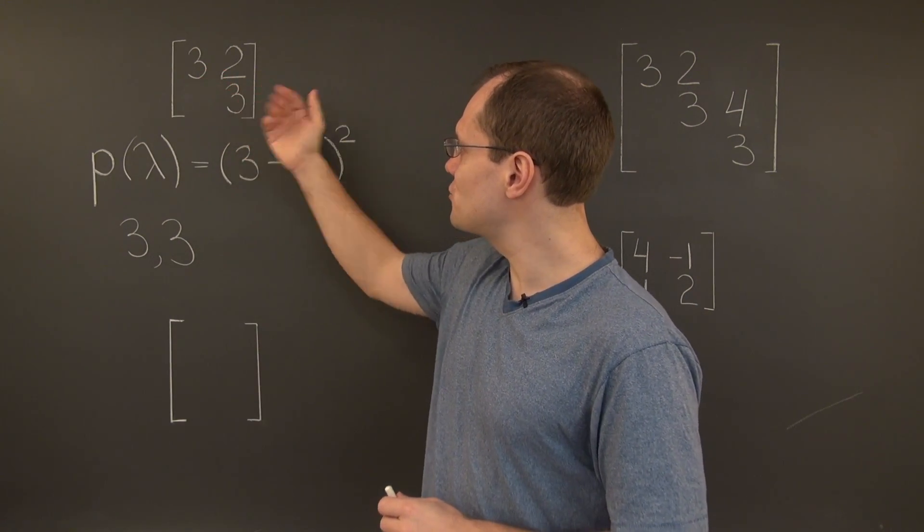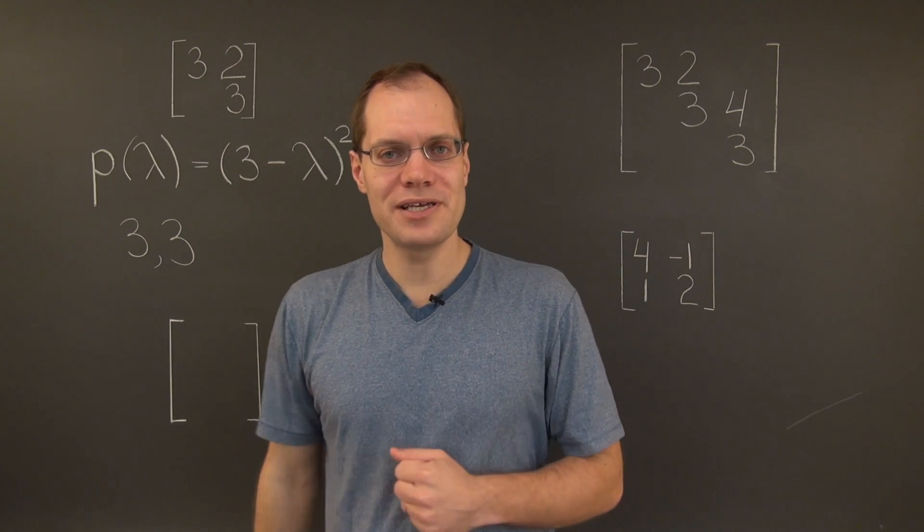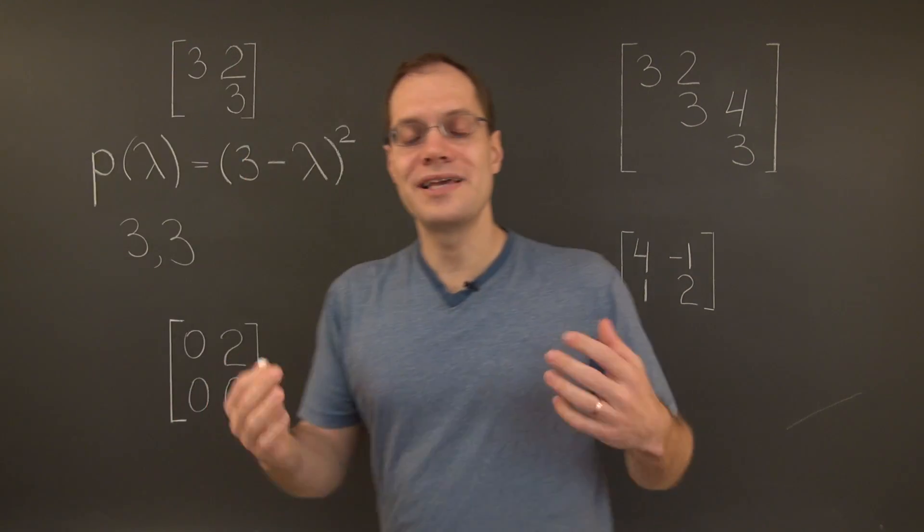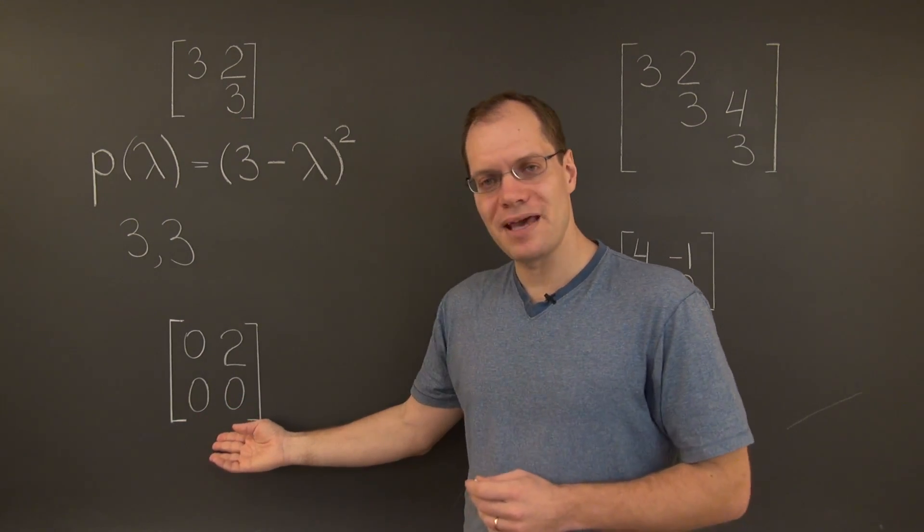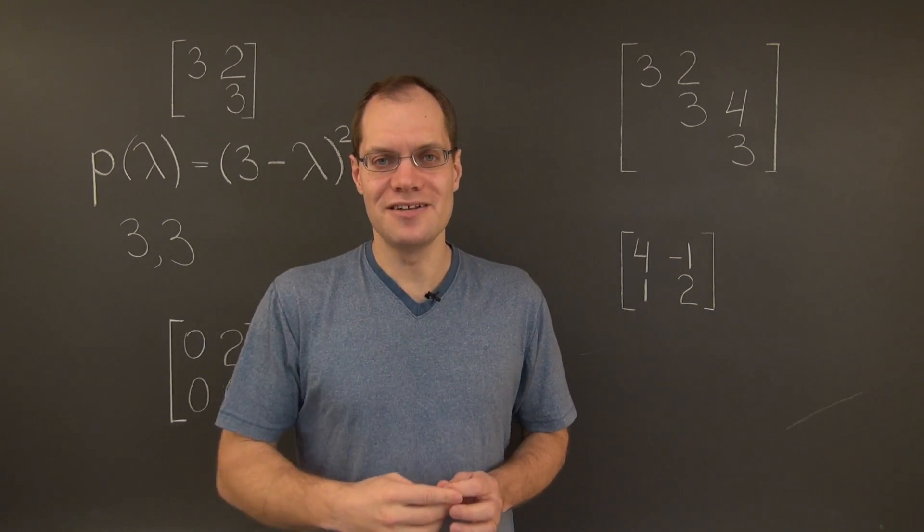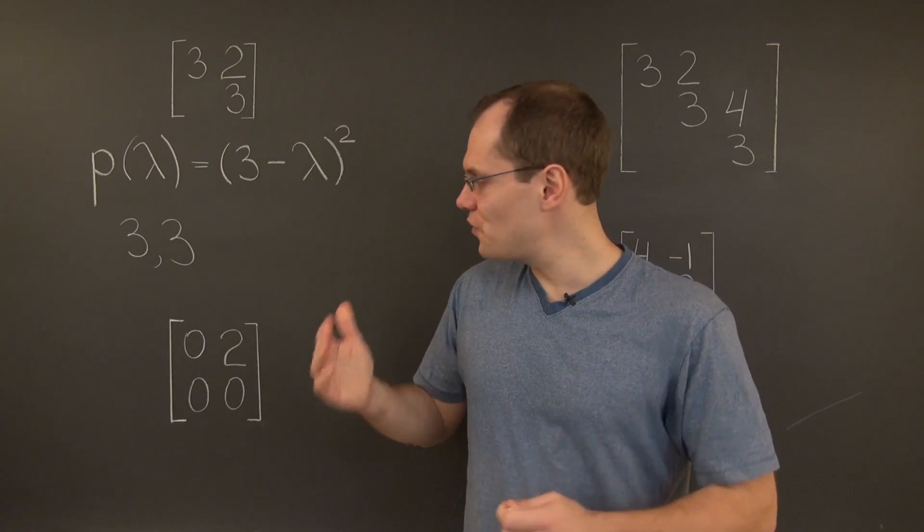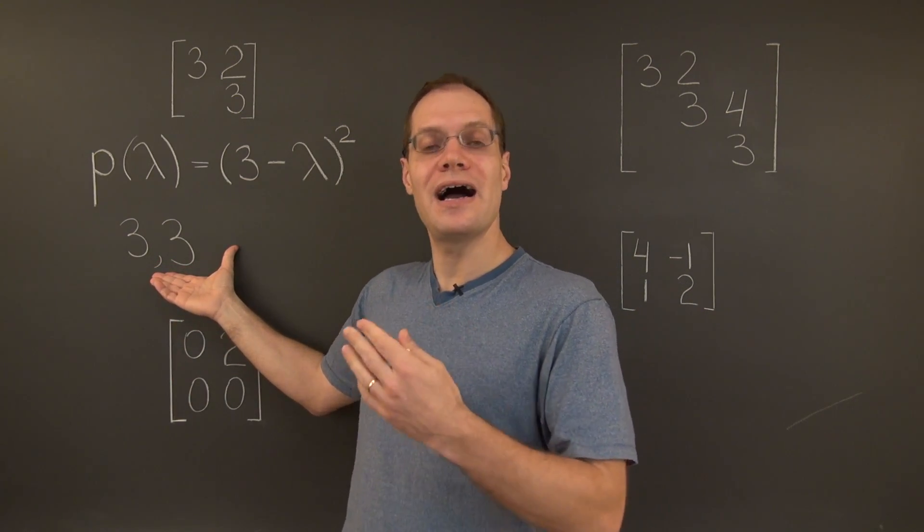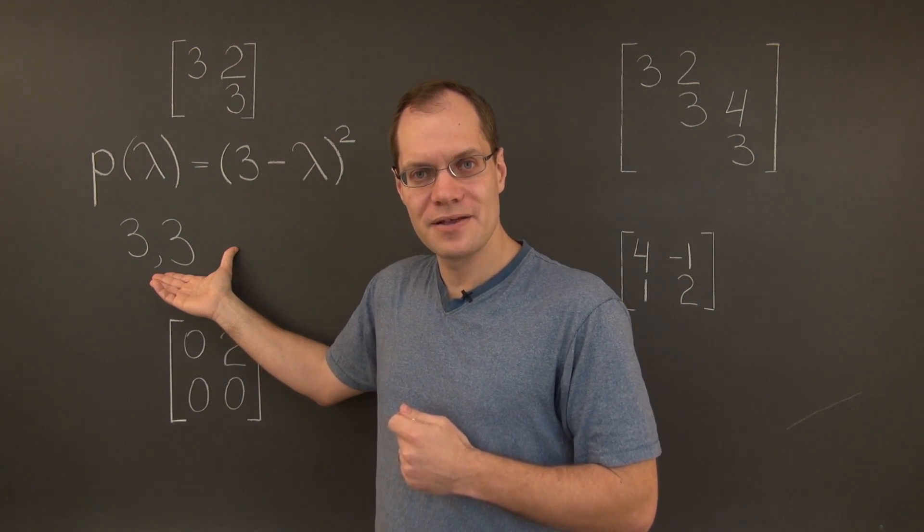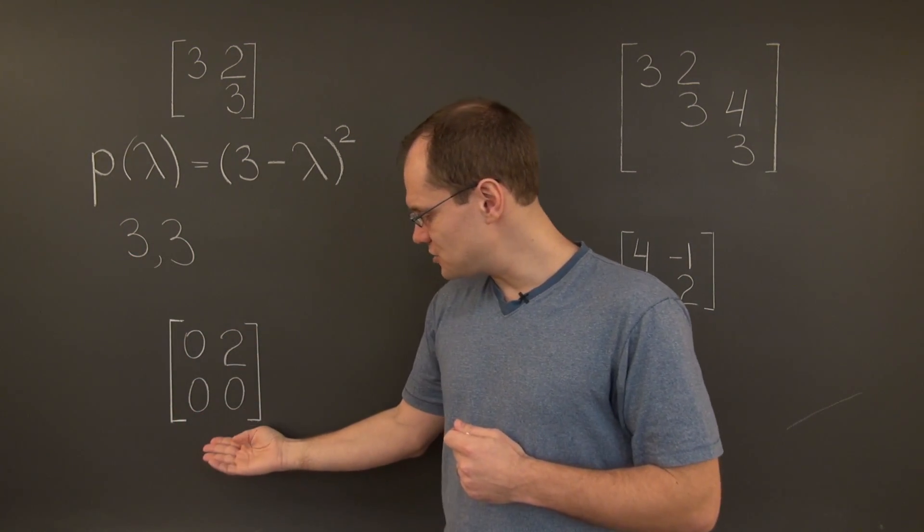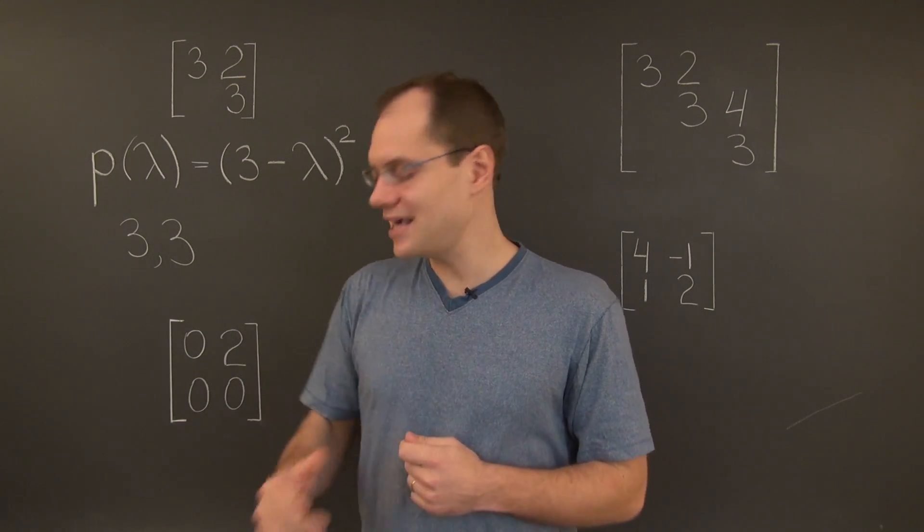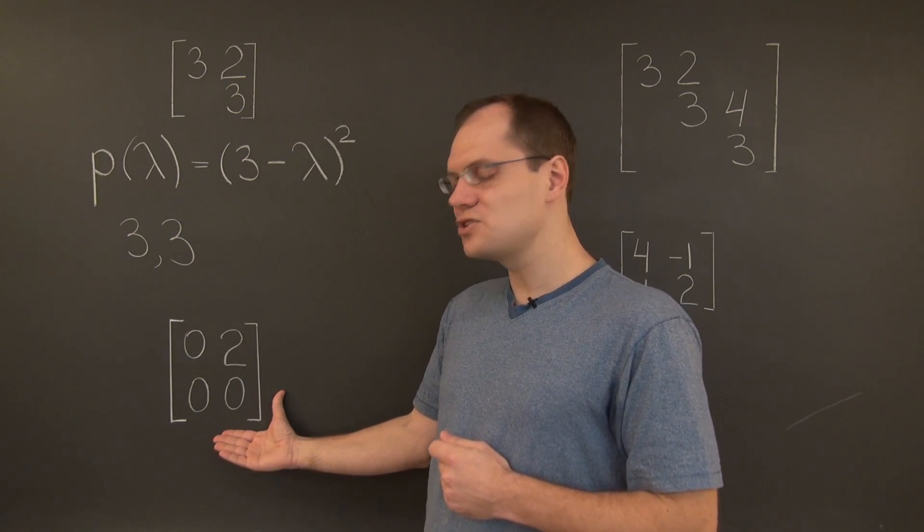Well, let's do what we're supposed to do. Subtract 3 from the diagonal and see what we get. And here is what we get. We get a matrix whose null space is one-dimensional, unlike what we saw before in an earlier video when we were discussing a matrix with an eigenvalue of high algebraic multiplicity. Back then, we got a matrix whose null space was two-dimensional. In this case, we get a matrix whose null space is one-dimensional.